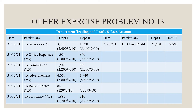Bank charges are $120, split in the 7:3 ratio. Stationeries are $2,700. For Department 1: $2,700 × 7/10 = $1,890. For Department 2: $2,700 × 3/10 = $810.